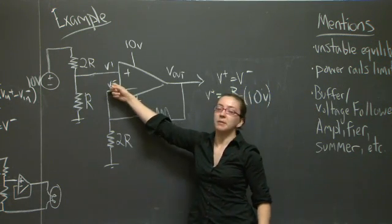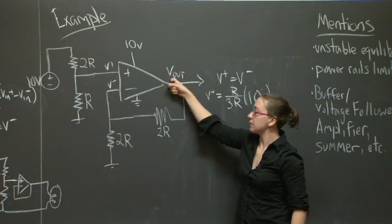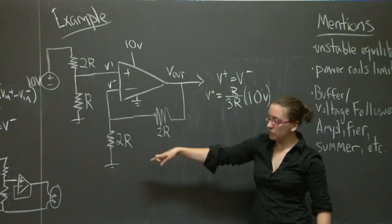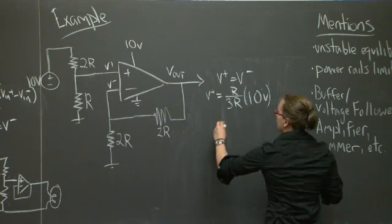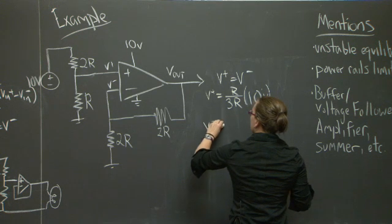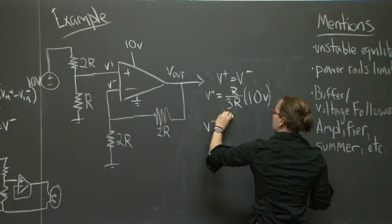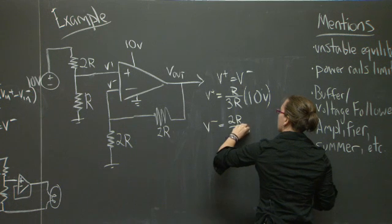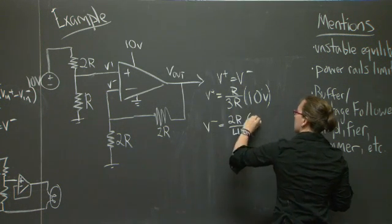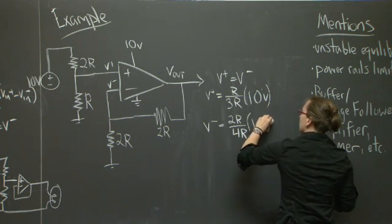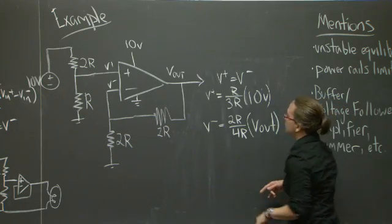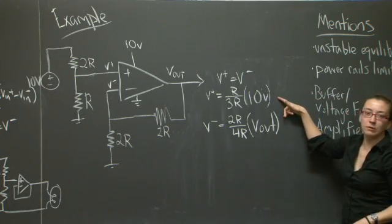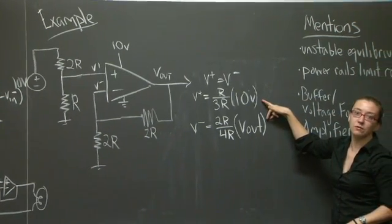I'm now interested in V minus in terms of Vout, which is another voltage divider. I can set these two equations equal to one another and solve for Vout.